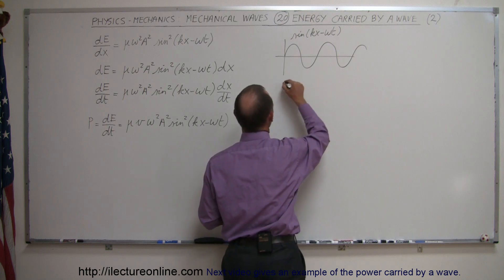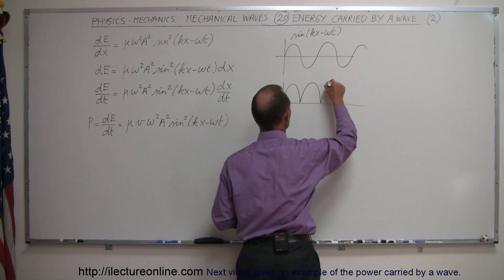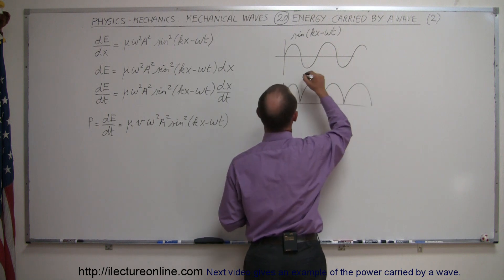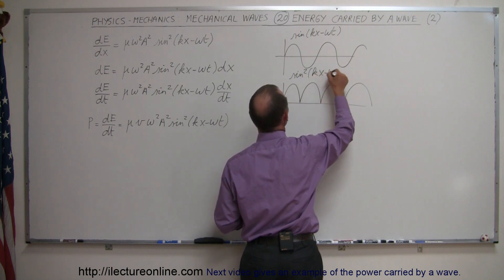Now let's say we square that, what does it look like? When we square that, we get something that looks like this. So this is the sine squared of Kx minus omega t.